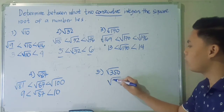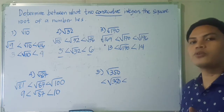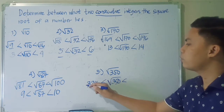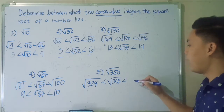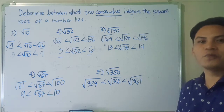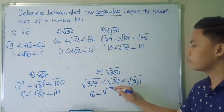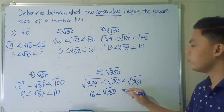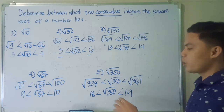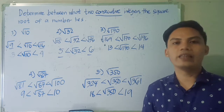How about the last number: square root of 350? The two consecutive perfect squares where 350 falls between are 324 and 361 — that is, square root of 324 and square root of 361. The square root of 324 is 18, and the square root of 361 is 19. Therefore, square root of 350 is between the consecutive integers 18 and 19.